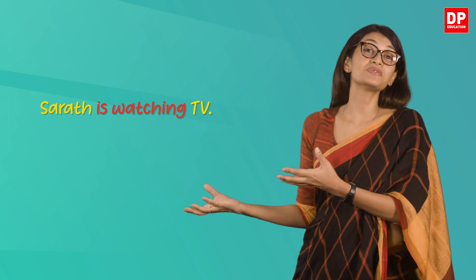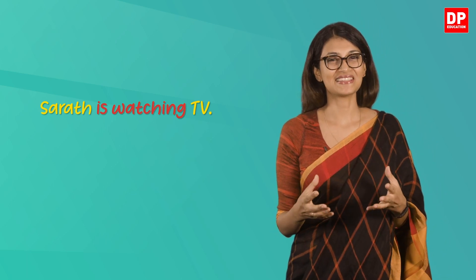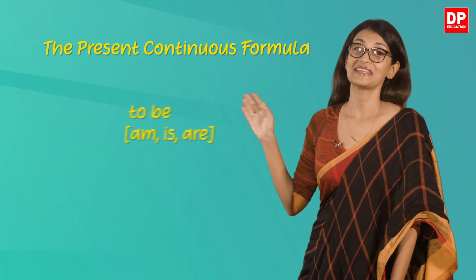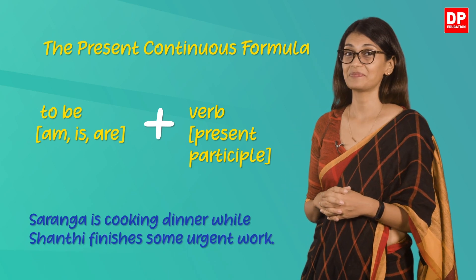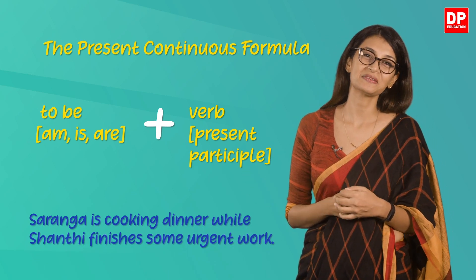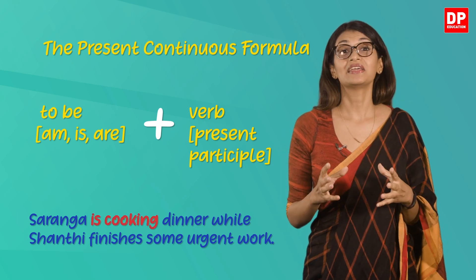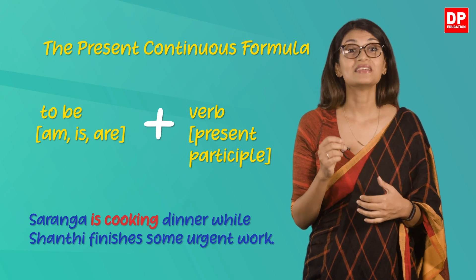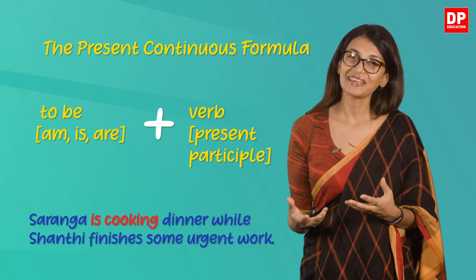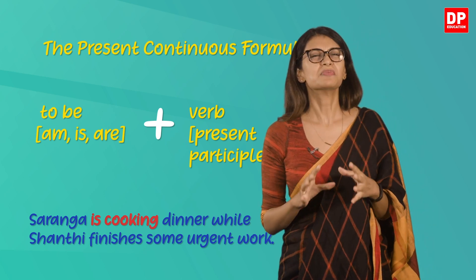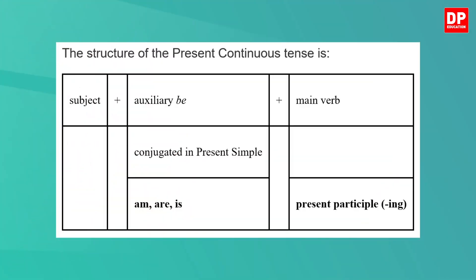She may even continue to watch TV in the near future. Now let's look at how the present continuous tense is formed: the verb 'to be' — that is 'am', 'is', or 'are' — plus the verb in the present participle form. For example: 'Saranga is cooking dinner while Shanti finishes some urgent work.' Here, 'is cooking' is the present continuous tense. 'Is' is the conjugated form of the verb 'to be', and 'cooking' is the present participle of the verb 'cook'.